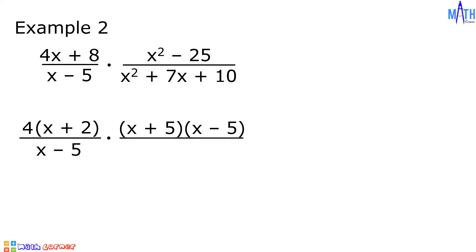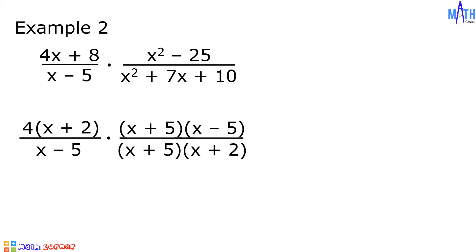Next is x squared plus 7x plus 10. This is a quadratic trinomial where a is equal to 1, b is equal to 7, c is equal to 10. Since a is equal to 1, let us find factors of 10 that when added equal 7. The factors we need are 5 and 2, since 5 plus 2 is equal to 7. So the factors of x squared plus 7x plus 10 are x plus 5 and x plus 2.